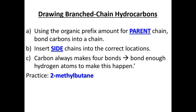When we draw our parent chains, our first step is naming and drawing these branched hydrocarbons using the organic prefix for our parent chain. Once we've completed that, we're going to insert our side chains into the correct position. The carbon is always going to make four bonds, so we just need to make sure we have enough hydrogens to do that.